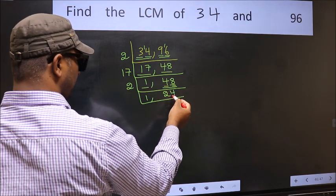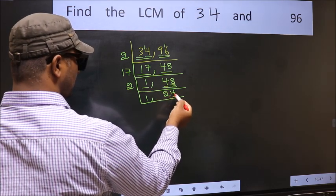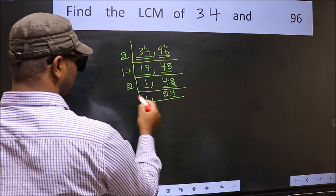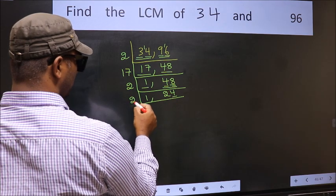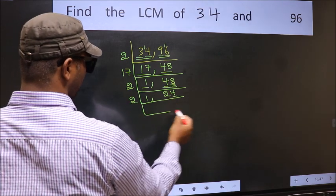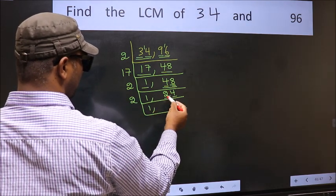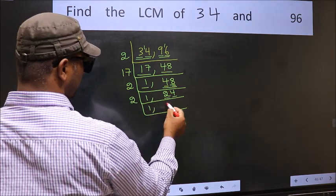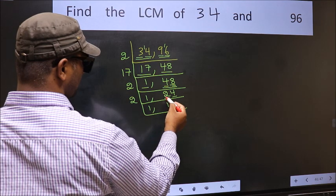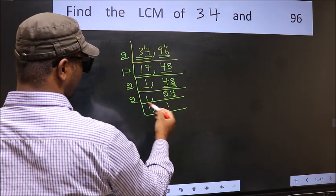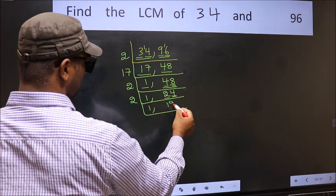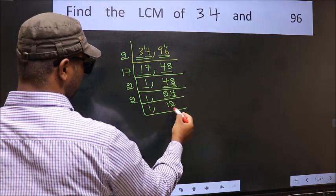Now here we have 24: last digit is 4 — even, so take 2. First number is 2; when do we get 2 in the 2 table? 2 ones are 2. The other number is 4; when do we get 4 in the 2 table? 2 twos are 4. So 24 divided by 2 gives 12, and 4 divided by 2 gives 2.